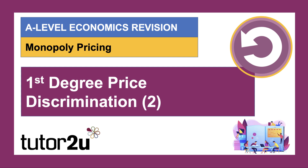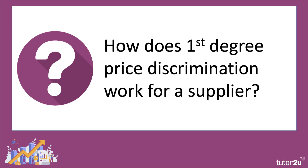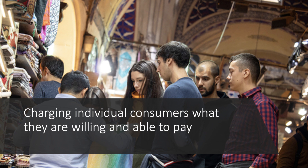In the second of our four videos looking at price discrimination, we're going to spend a few minutes thinking about first degree price discrimination. How does this work for a supplier? Basically, the idea is that you try to tease out of each individual potential consumer what they're willing and able to pay. The example we gave was perhaps a tourist bazaar, where the seller is essentially negotiating or bartering with each customer for the price they're willing to conclude a transaction at.